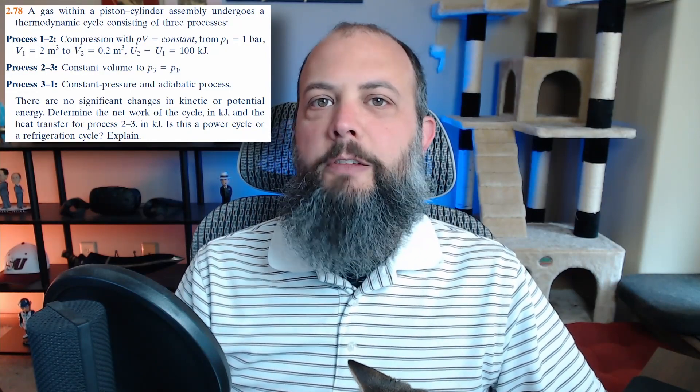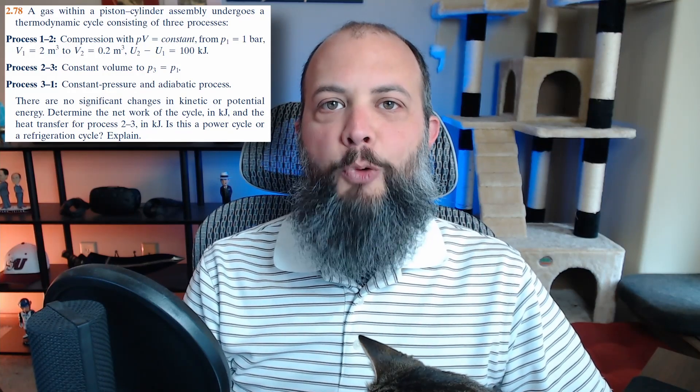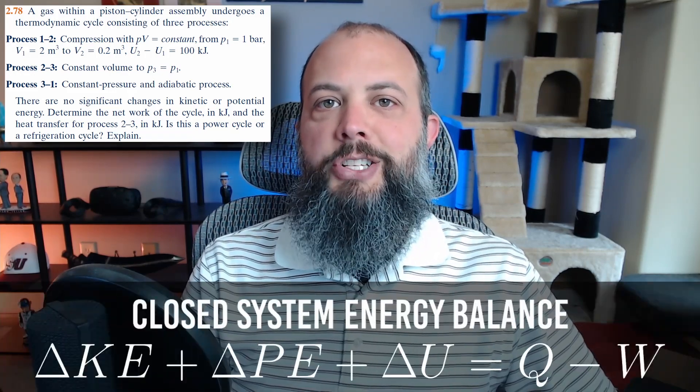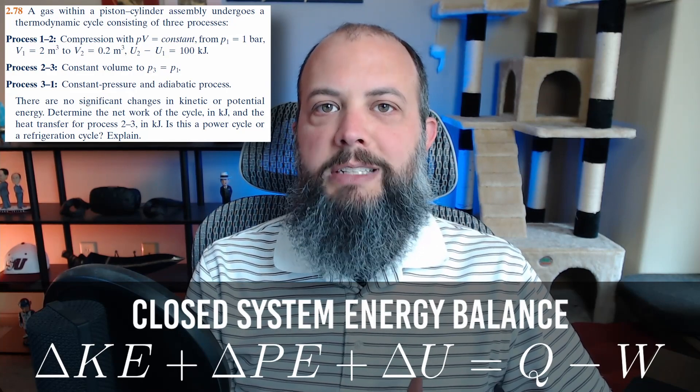A gas within a piston cylinder assembly undergoes a thermodynamic cycle of three processes. To finish this problem you're going to need to make a drawing of a PV diagram. You have to calculate work multiple ways. Once you'll need to use calculus, the other you'll need to just do area under the curve.